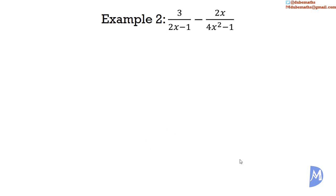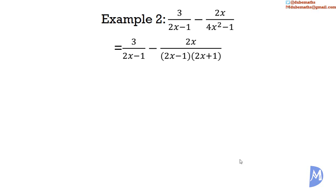Example 2: 3 over (2x minus 1) subtract 2x over (4x squared minus 1). We need to recognize that 4x² minus 1 is the difference of two squares, so it equals (2x minus 1)(2x plus 1). Thus the LCM of (2x minus 1) and (2x minus 1)(2x plus 1) is (2x minus 1)(2x plus 1).